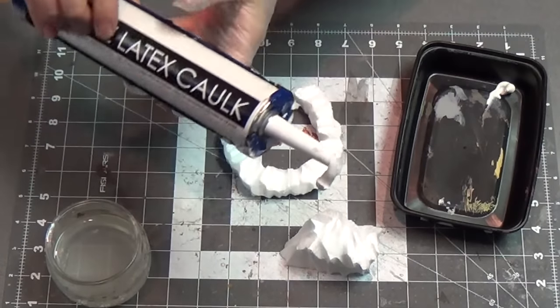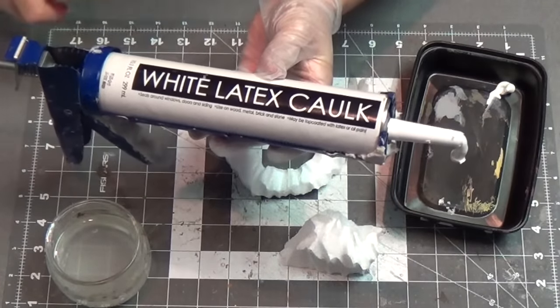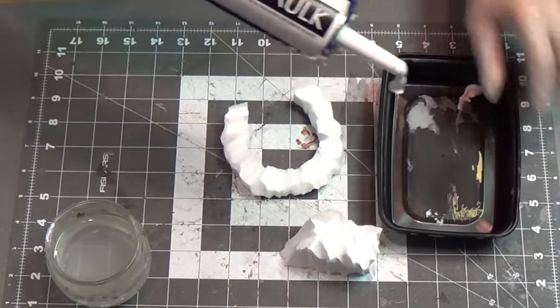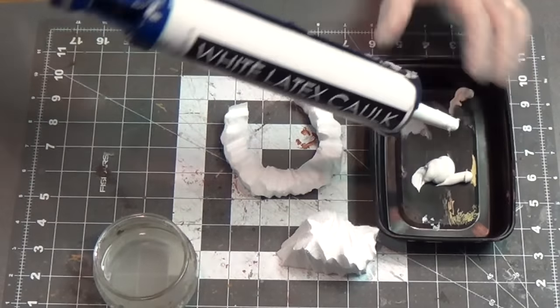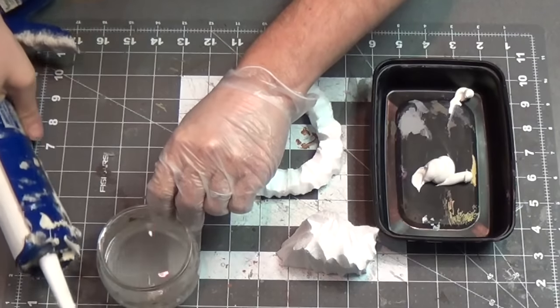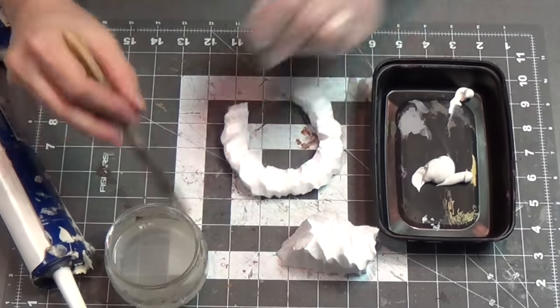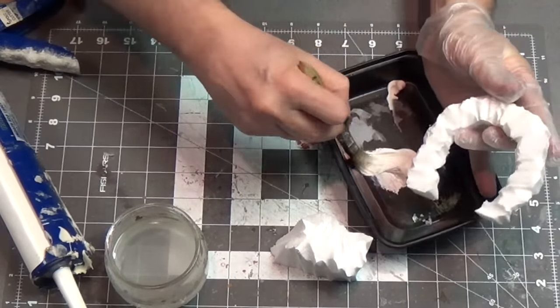Now I'm going to use this latex acrylic caulk. This will do two things. It will cover up the beading that's in this kind of white styrofoam, so it won't be as prevalent. But it will also strengthen it up a bit. So you notice I have a glove here and some water. And I'm going to use a wide brush and kind of brush it on.